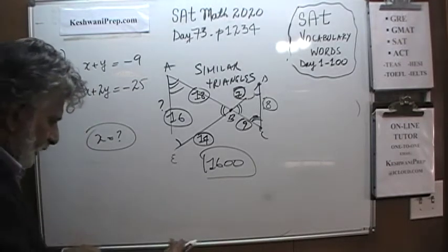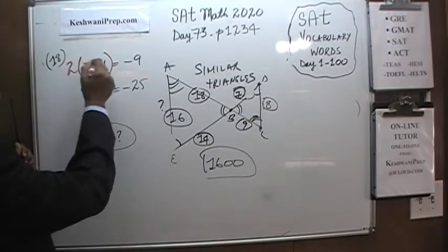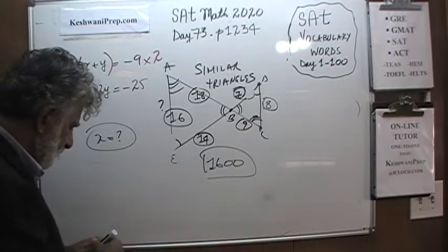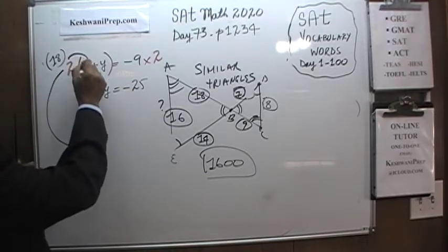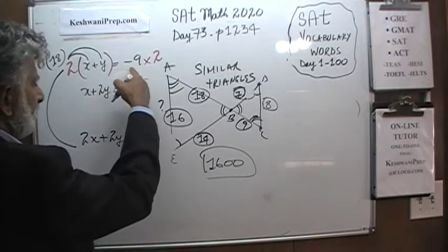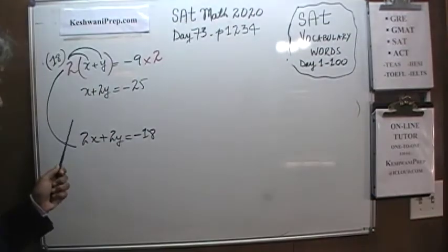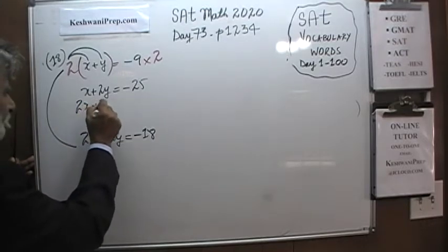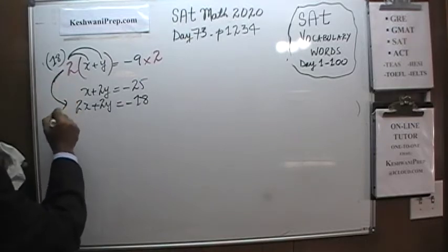We are going to convert this into 2y by multiplying the first equation by 2. Let's multiply both sides of the first equation by 2. When we do that, the first equation boils down to 2x plus 2y equals 2 times negative 9, which is negative 18. So: 2x plus 2y is equal to negative 18. That's just 2 times the first equation.